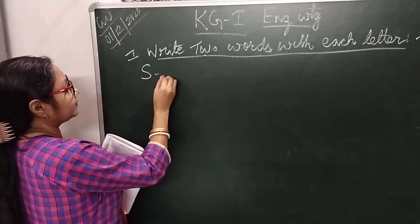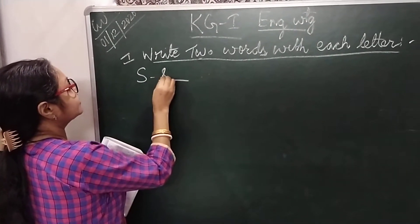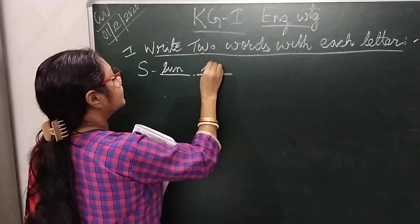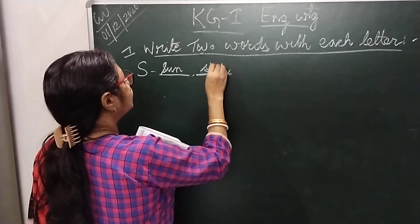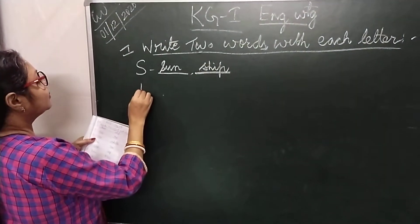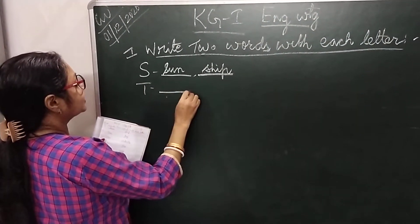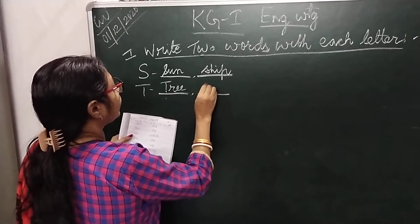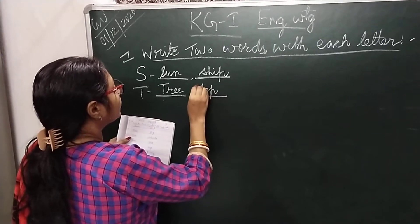The first word with S is S-U-N sun. The other word is S-H-I-P ship. Then with T, the first word is T-R-E-E tree. The second word is T-O-P top.